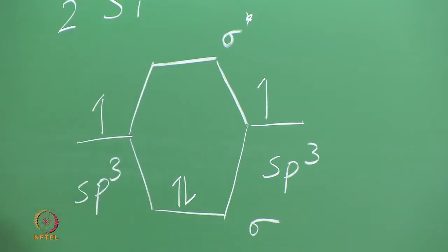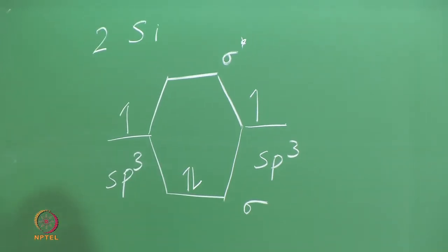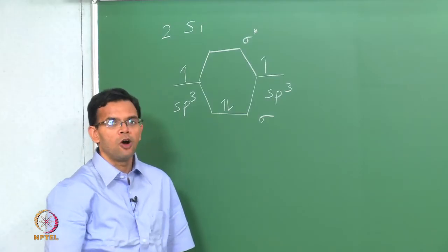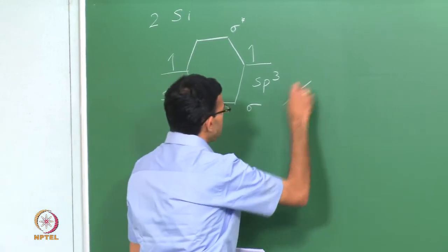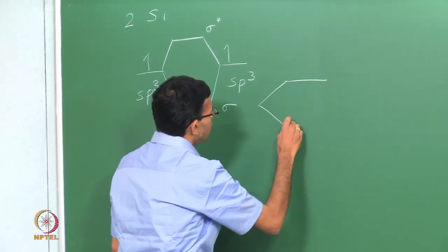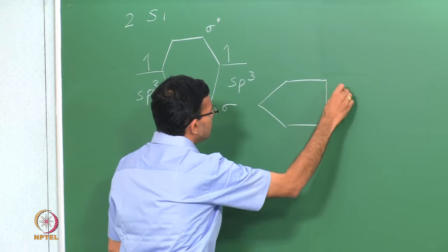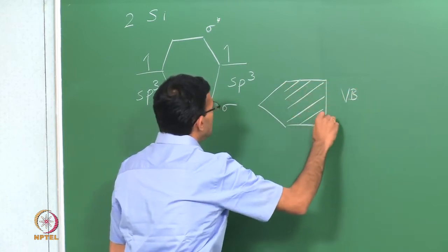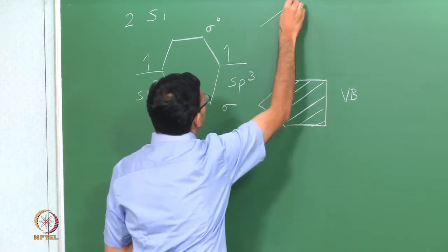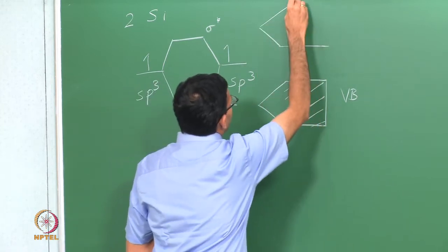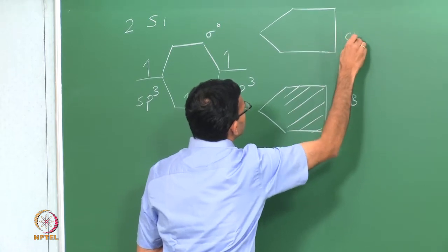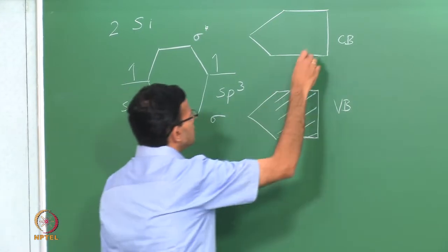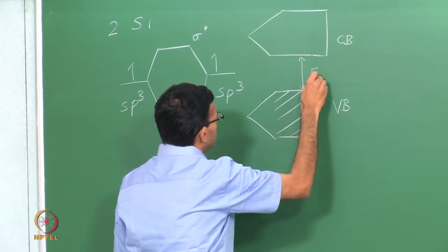If you have a silicon solid, you have a lot of these bonding and antibonding orbitals, and these come together to form the valence band and the conduction band. The bonding forms the valence band, which is completely full, and the antibonding forms the conduction band, which is empty. So the valence band is completely full, the conduction band is empty, and there is a band gap between them.